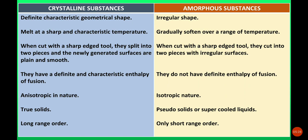Examples of crystalline solids include NaCl. Examples of amorphous solids include rubber and plastic. Crystalline solids have a definite and characteristic enthalpy of fusion, while amorphous solids do not. Crystalline solids are anisotropic in nature, while amorphous solids are isotropic. Crystalline solids are known as true solids; amorphous solids are known as pseudosolids or supercooled liquids. Crystalline solids have long-range order; amorphous solids have only short-range order.